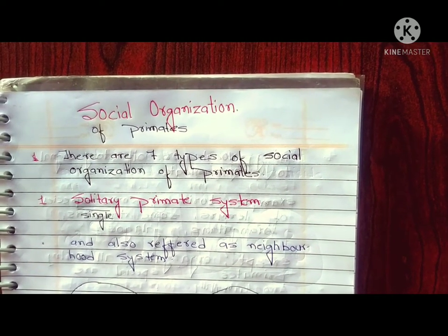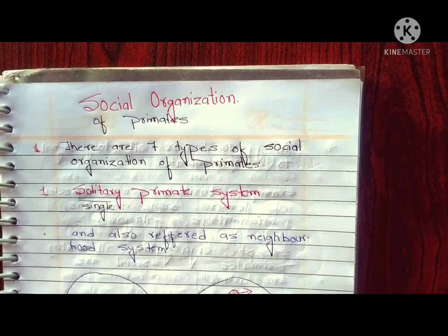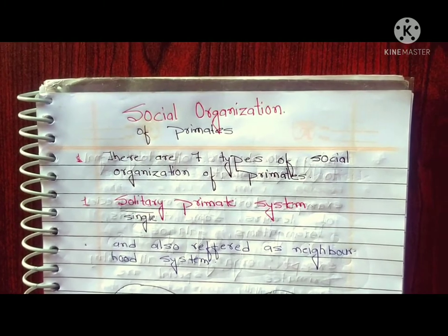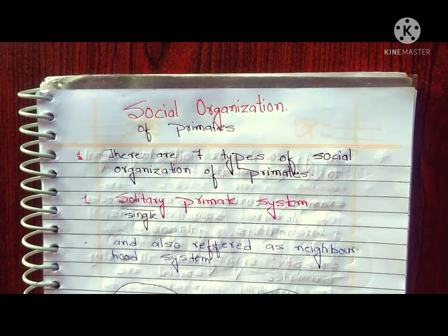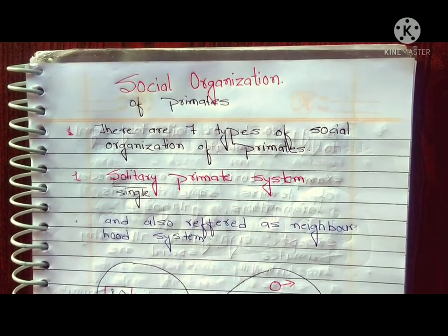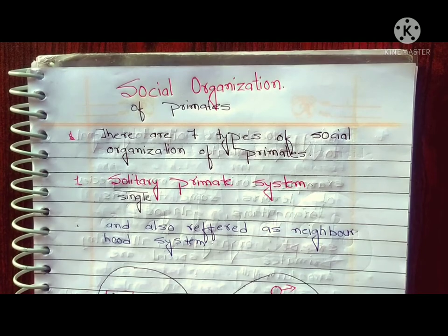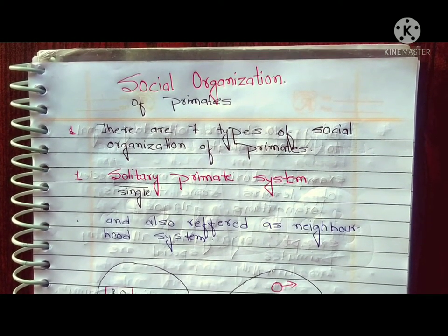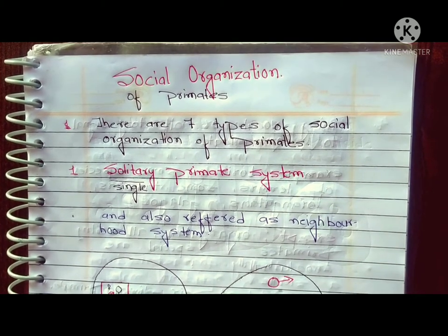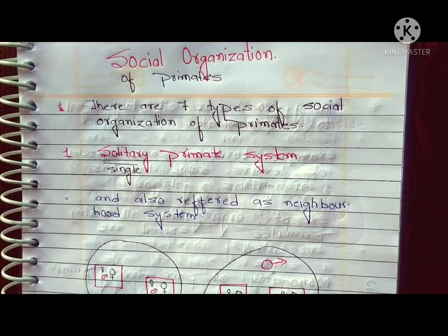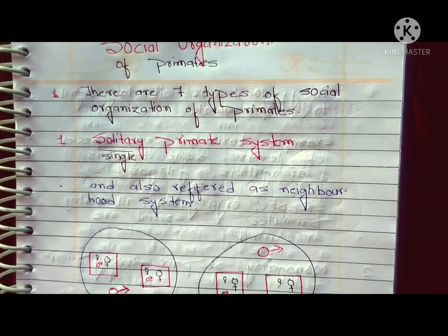Hello everyone, this is Sufya, welcome back to Sufya's Biology. In this video we will see the social organization of primates. There are seven types of social organization, so let's see what are the types of social organization of primates.